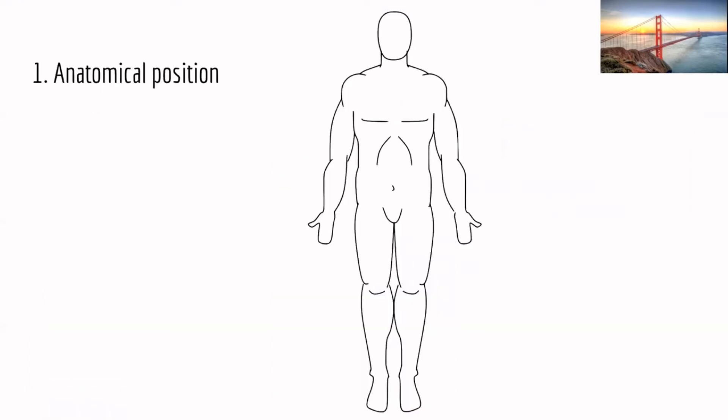Let's introduce the anatomical position first. That's the universal position that people refer to in the medical field, because it provides a standard for all professionals to describe the anatomical relationship between different structures. The person is standing up — make sure you know you're not sitting or lying down. The feet are slightly apart and the head is looking forward.